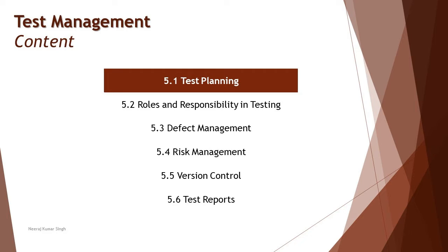As part of this chapter we'll be covering different topics like working on the planning details, roles and responsibility in testing, defect management, risk management, version control, and the various test reports. So let's figure out what exactly all these components of test management are. Today we'll be getting started with the very first thing — entry and exit criteria — which are defined as part of test planning.